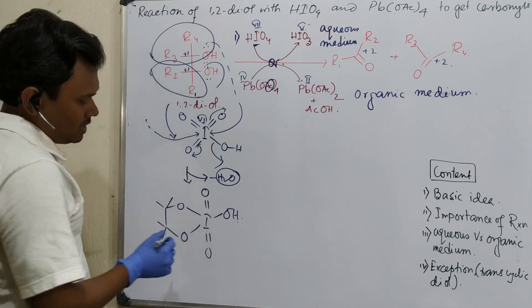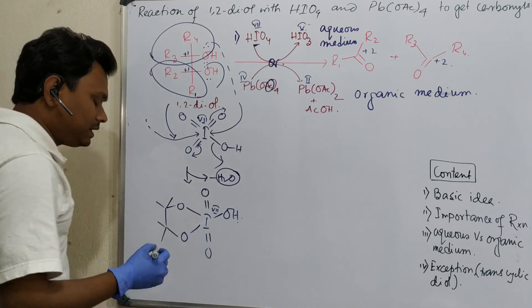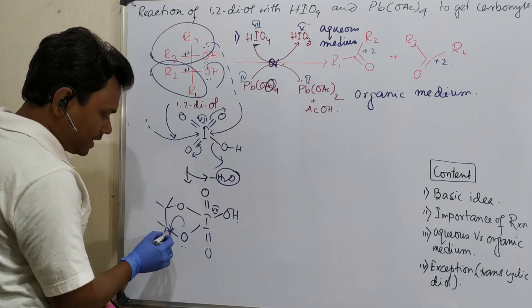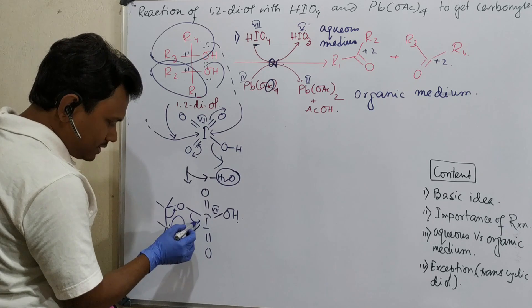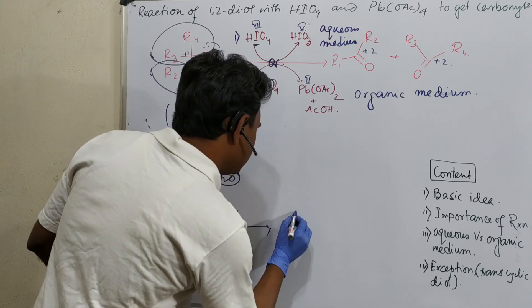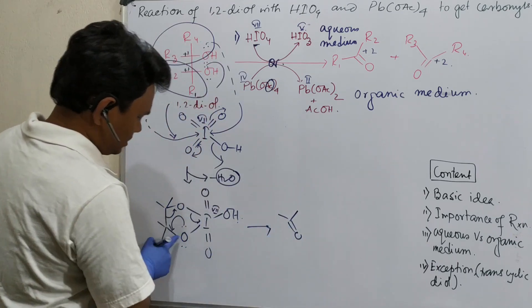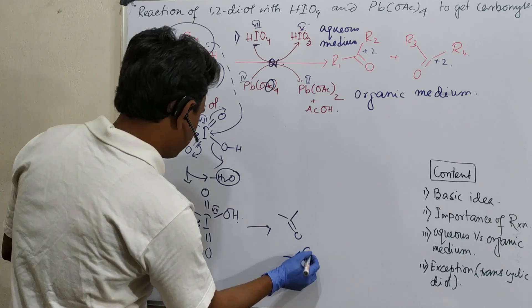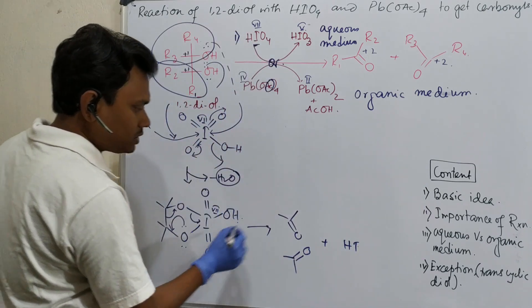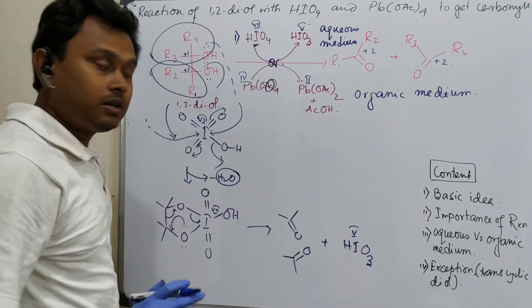Right now, iodine is at +7 in the cyclic intermediate. In the next step, the lone pair pushes back: this bond pair goes to the iodine. So iodine is reduced because this bond pair goes to the iodine. Consequently, the C=O double bond forms, and the product is the aldehyde or ketone plus HIO3 — iodic acid with three oxygens — meaning iodine is now at +5 oxidation state. This is the overall mechanism for the periodic acid reaction.